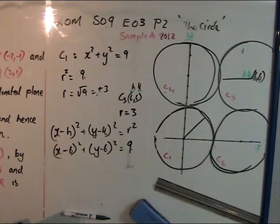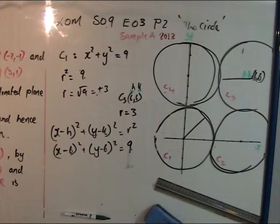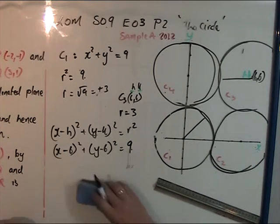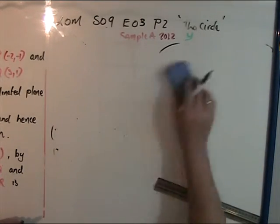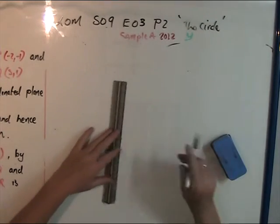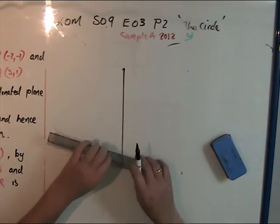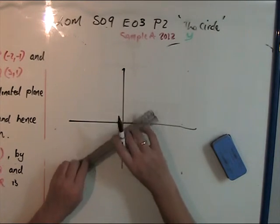So the equation of C3 is (x-6)² + (y-6)² = 9, and the coordinates of the center C3 are (6,6). That was very easy. Now there's just a couple of things I want to cover about slopes.